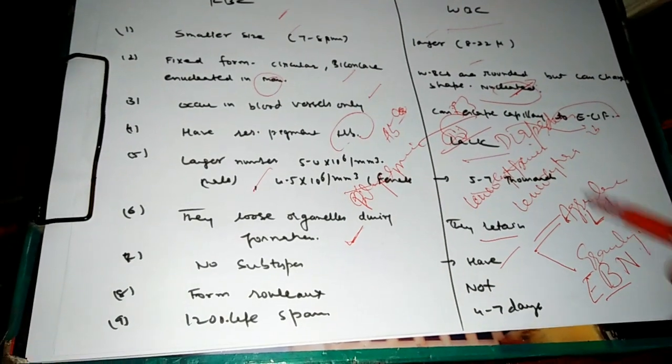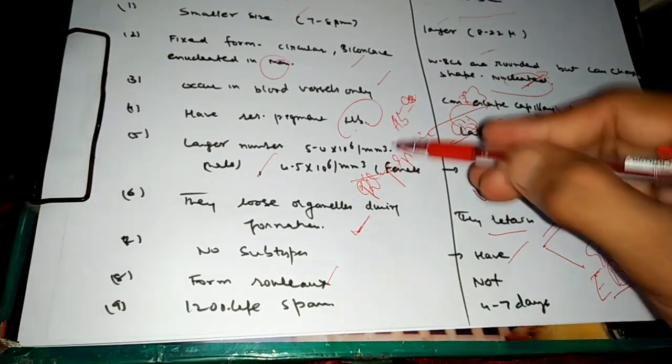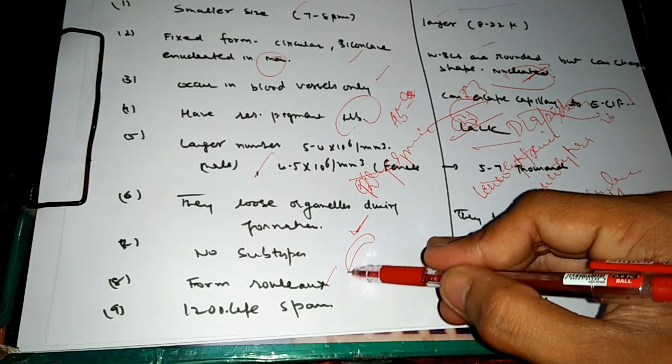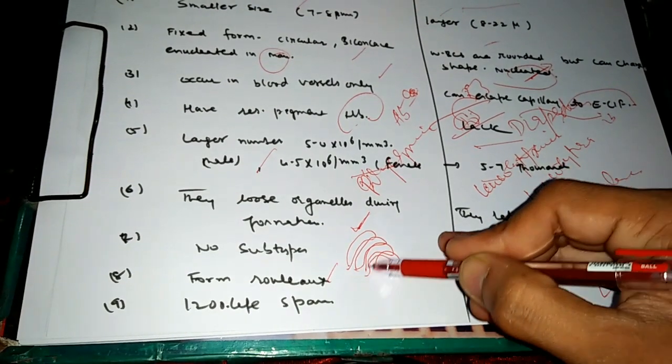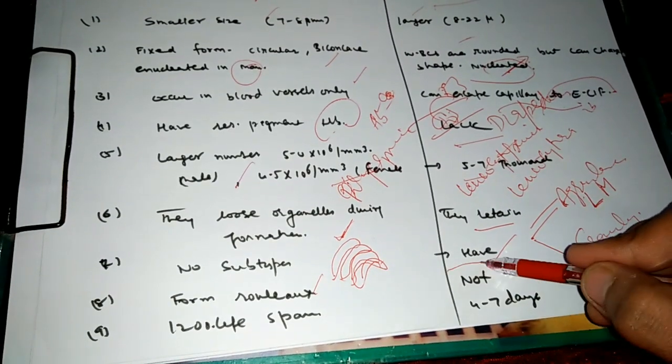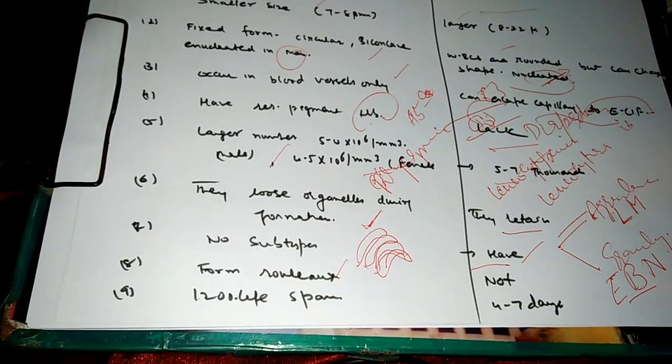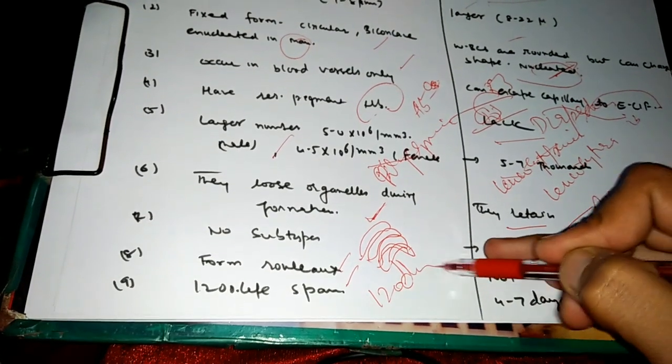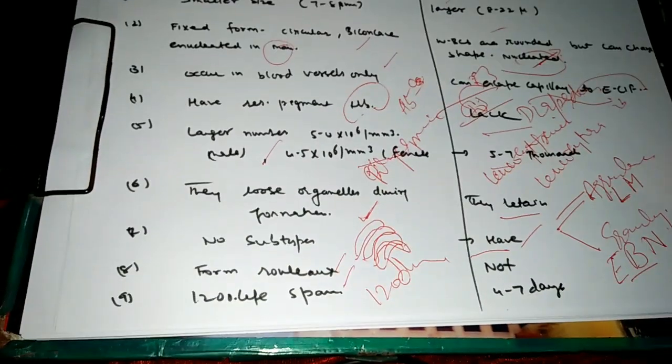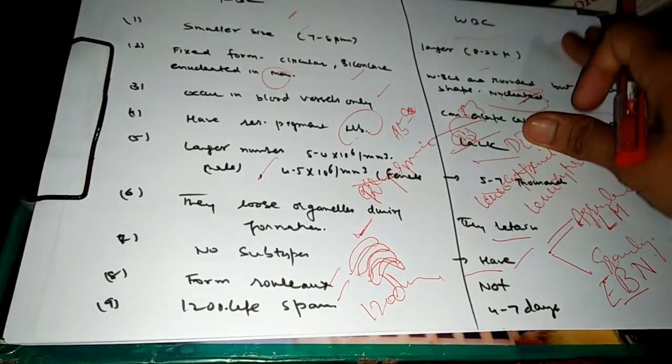Next is the rouleaux. They are aggregated and form the pile-like structure. This is called rouleaux structure. Next is the life span. The RBC have 120 days life span and WBC has a shorter life span, up to four to seven days.